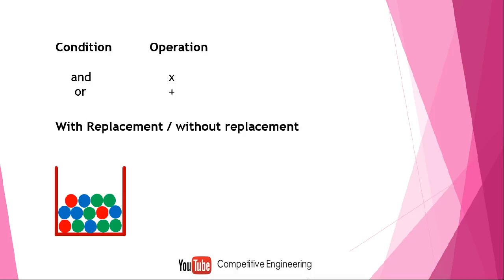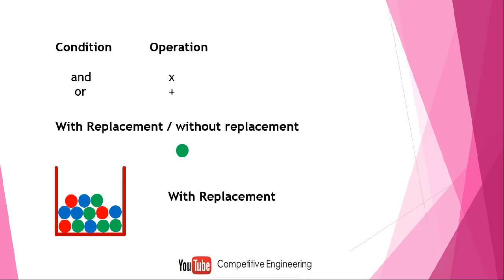Another concept is with replacement and without replacement. Consider a basket which contains balls in blue, red, and green color. I take one red ball, then I want to take one more ball. With replacement means I keep the ball back first, then take another ball — for example a green ball. This is called with replacement.